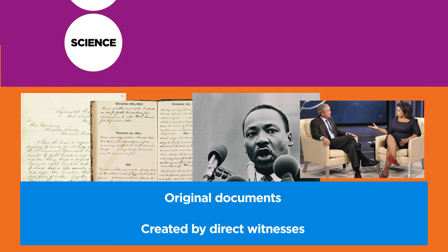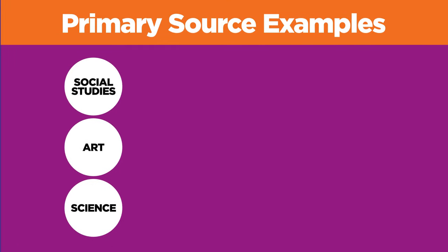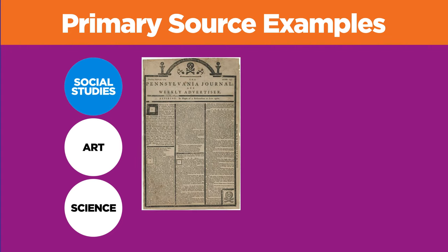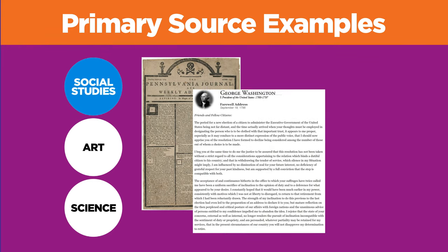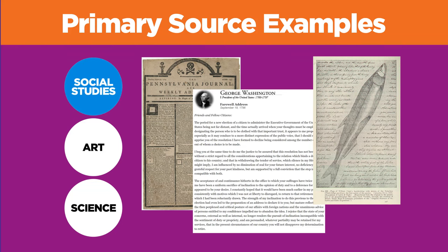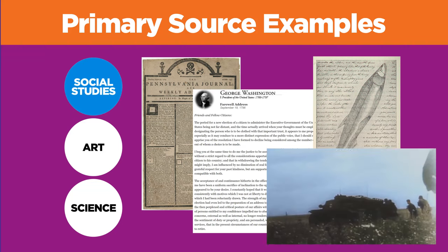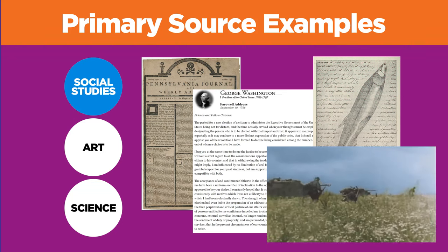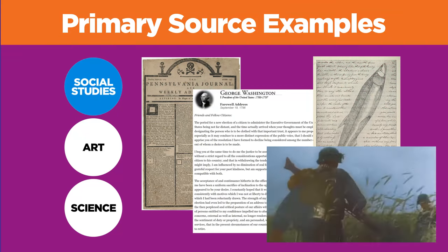Let's look at some primary source examples. For social studies, you may find a newspaper article written during the Revolutionary War, a transcript of a speech given by George Washington, excerpts from the journals of Lewis and Clark, or newsreel video footage of World War II.